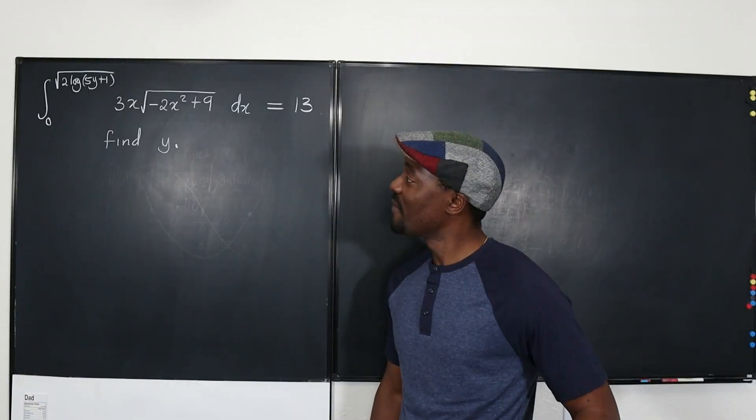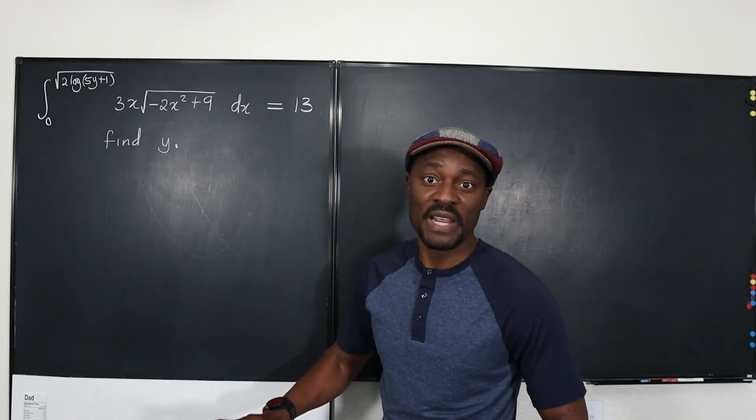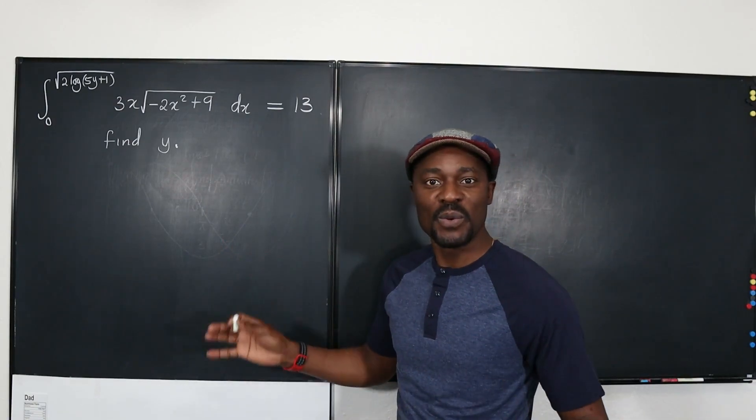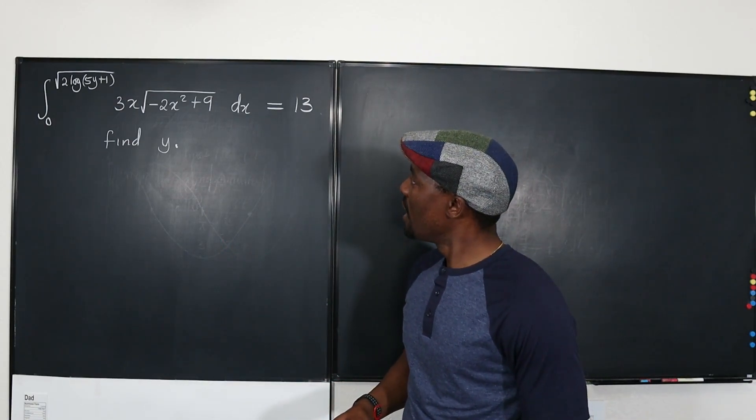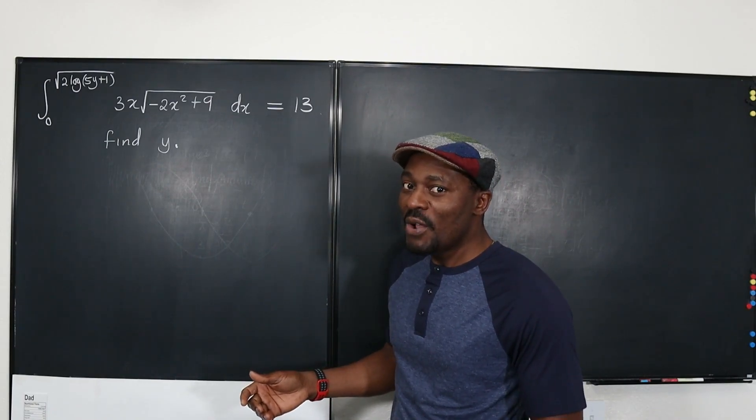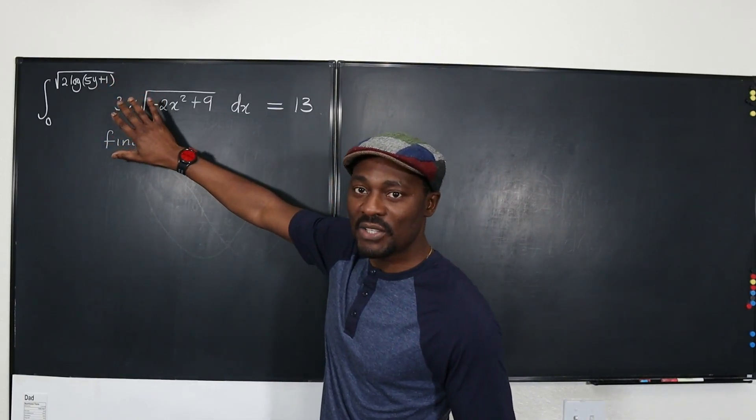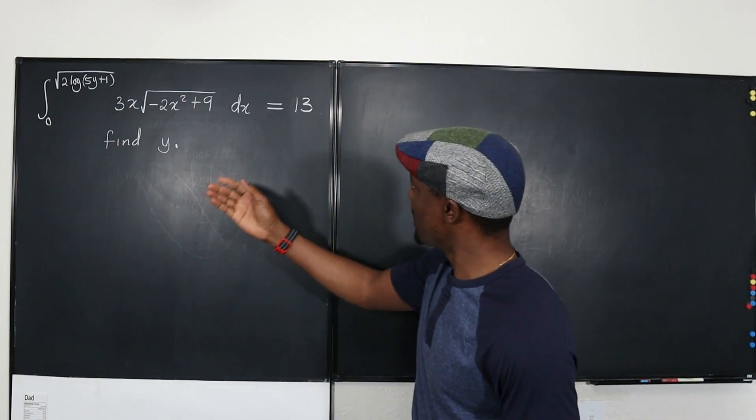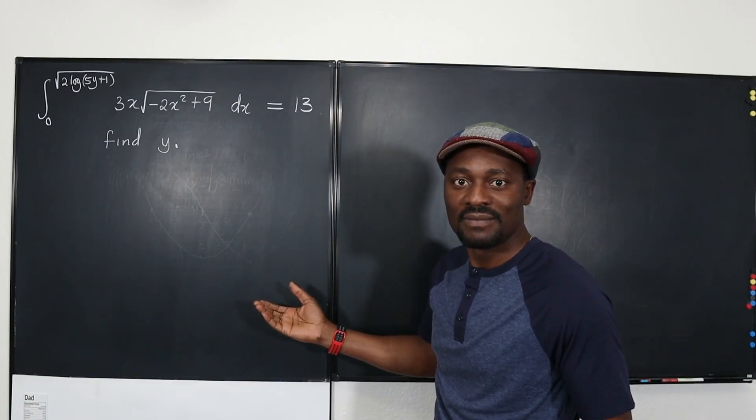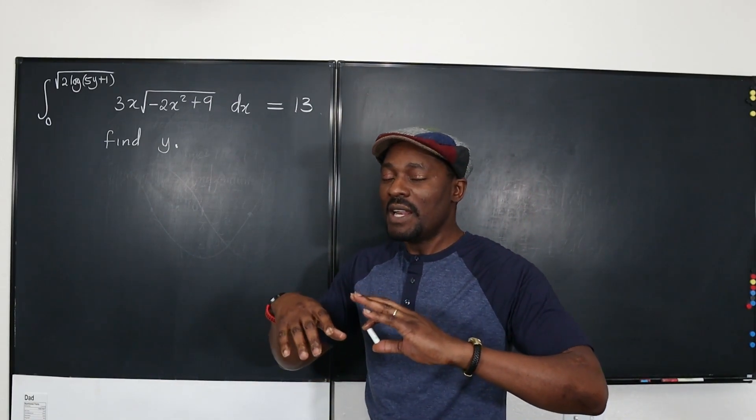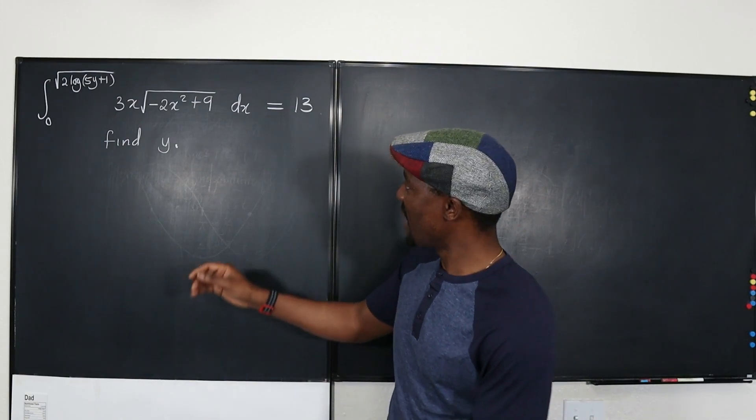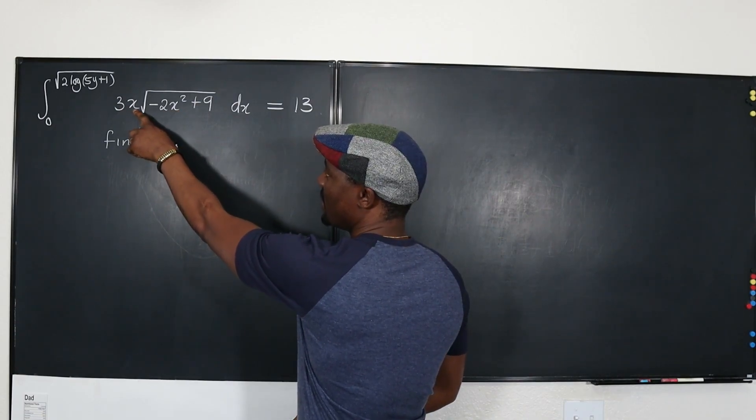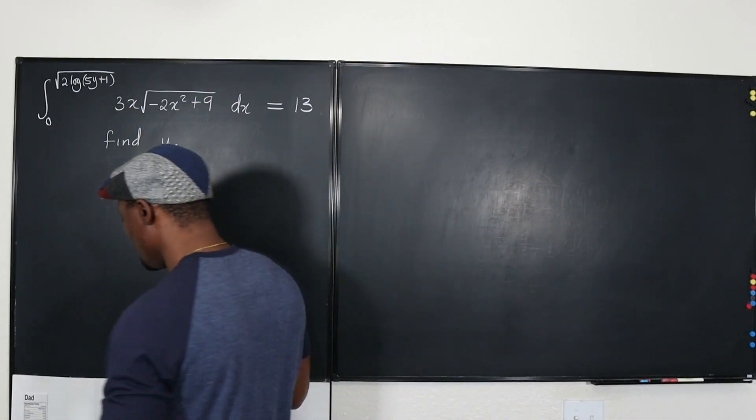So this is what we're going to do. We're just going to integrate this using any method we want to integrate it. We might do our u substitution, whatever we want to do, and find it. But you see, you cannot evaluate the integral because you don't know what this number is, because we don't know what y is. But they told us that it's always going to be equal to 13. So let's just start with our u substitution, because I know u substitution is going to be good for this integral, because the derivative of this is going to contain x.